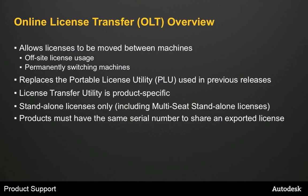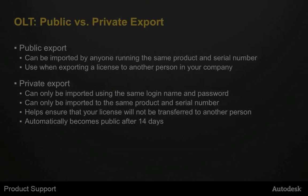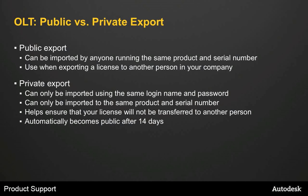The products need to have the same serial number in order to share an exported license. For example, I can't export a license from Revit and then import that into AutoCAD, nor can I export from one serial number of AutoCAD and import it into a different serial number. There are two methods for exporting a license: public and private. A publicly exported license can be imported by anyone running the same product and serial number — useful when exporting to another person in your company. A privately exported license can only be imported using the same login name and password used when exporting, and only to the same product and serial number, ensuring your license won't accidentally be transferred to someone else.